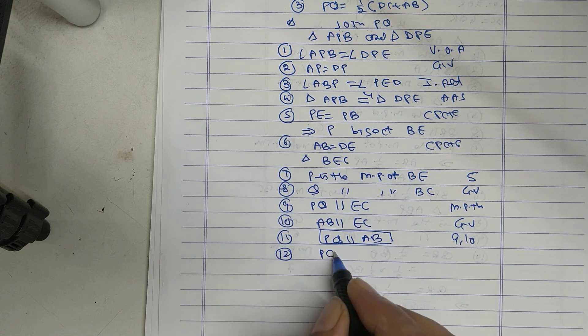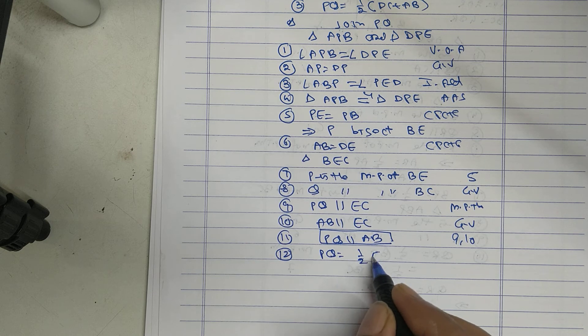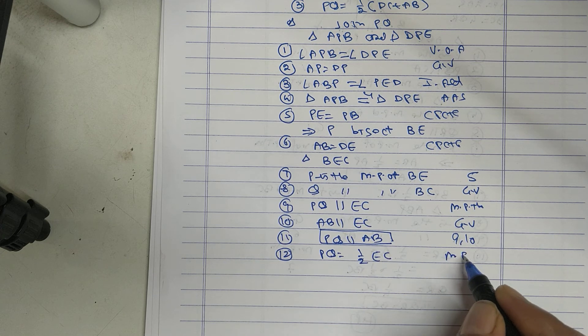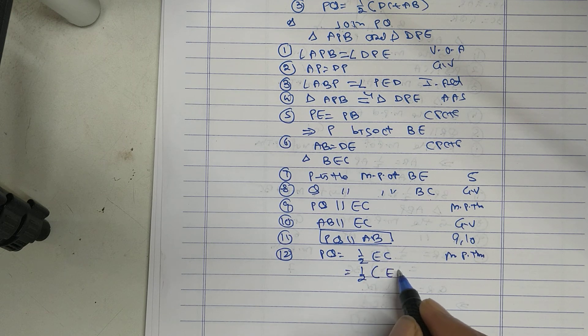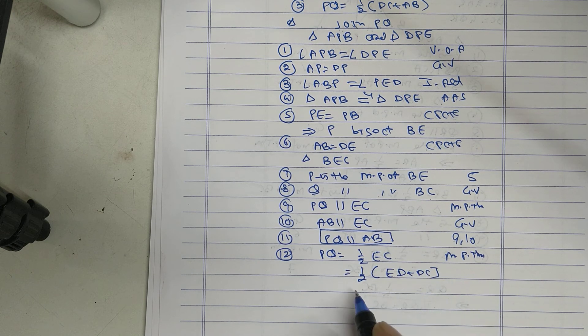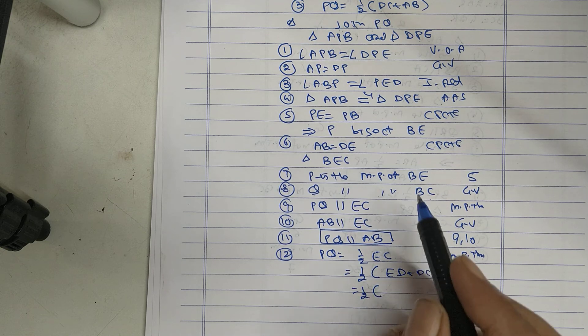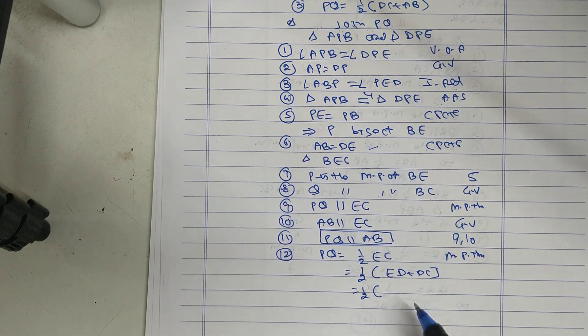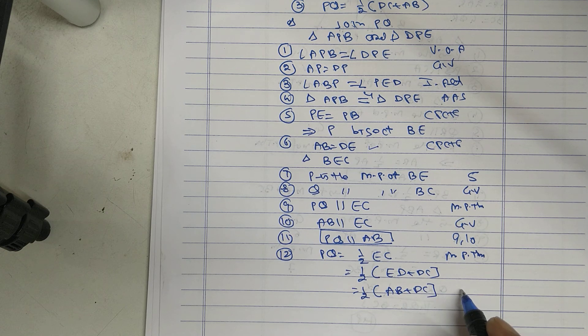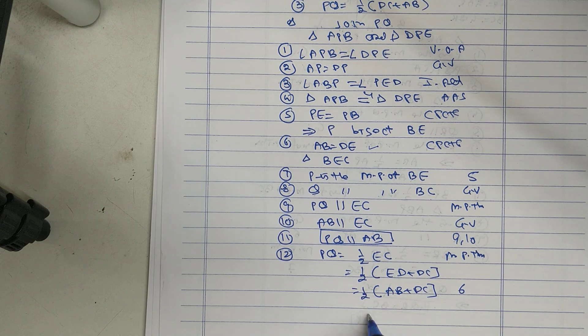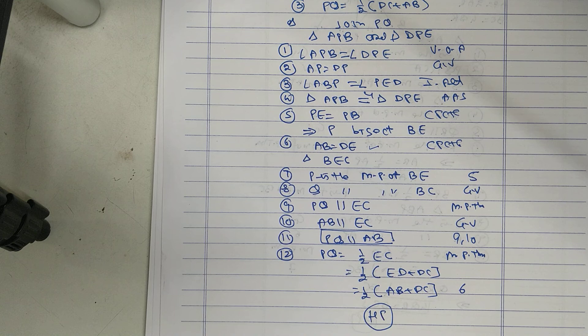Also PQ is half of EC by midpoint theorem. EC equals ED plus DC, but ED equal to AB from statement 6, so PQ equals half of AB plus DC. Hence proved. Video ends, thanks.